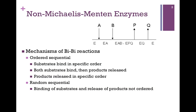The first is called the ordered sequential, and that's illustrated at the top of the screen here. We have the free enzyme. It binds our first substrate, A, and our second substrate, B, so here we have the enzyme bound to both substrates. It will then carry out catalysis and convert those to our two products, and then we have an ordered release — P first and then Q — and here's our regenerated form of our original enzyme.